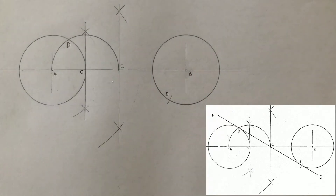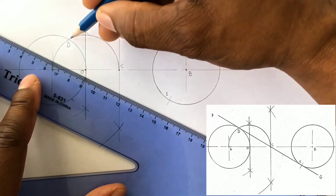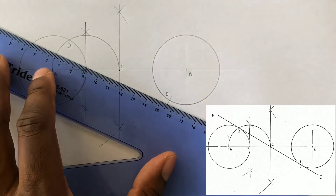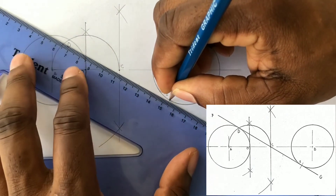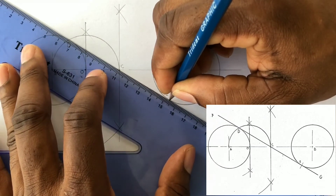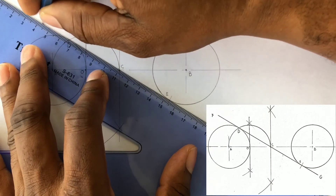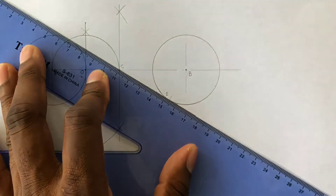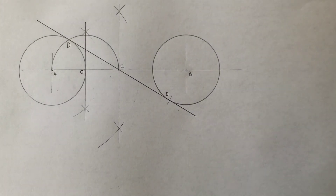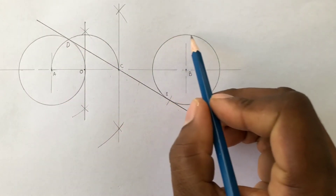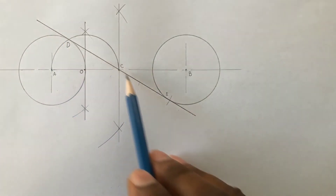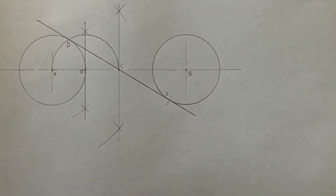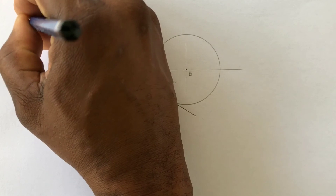We can now draw our required internal tangent to pass through point E and point D. For two equal circles having the same radius or the same diameter, we have just drawn our internal tangent. Note that this tangent falls on the inside of both circles. We can now label our tangent F and G.